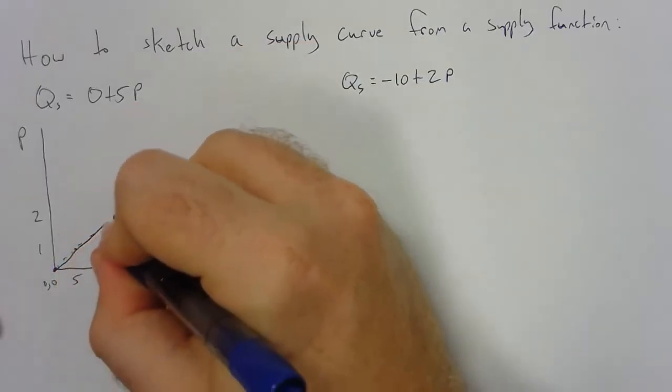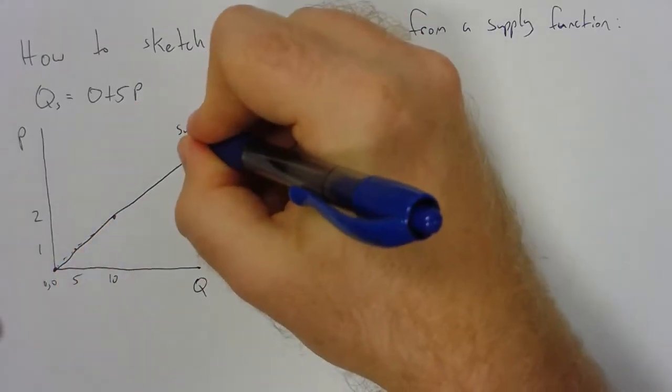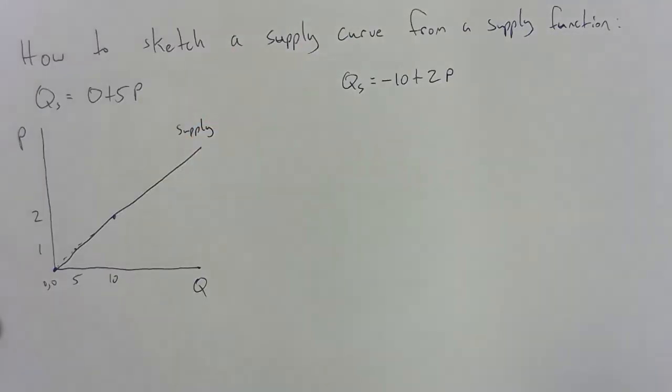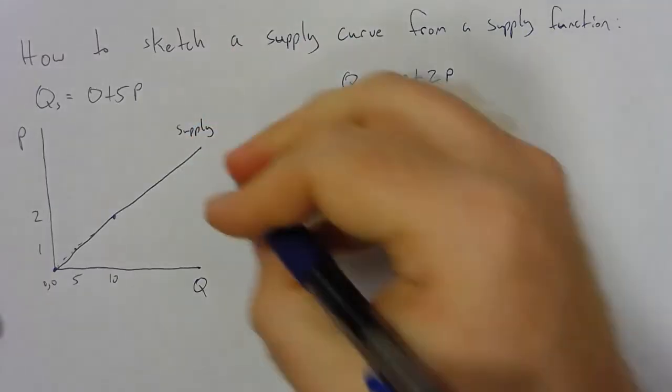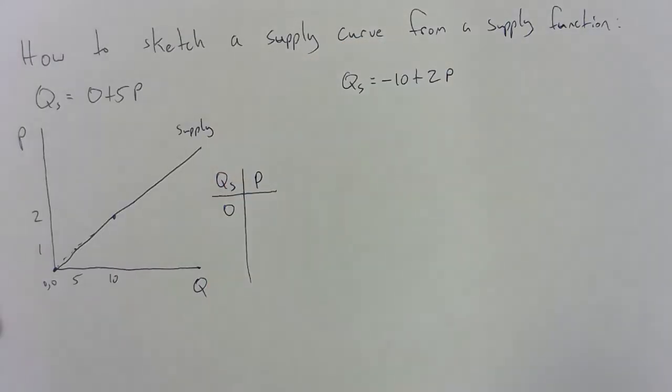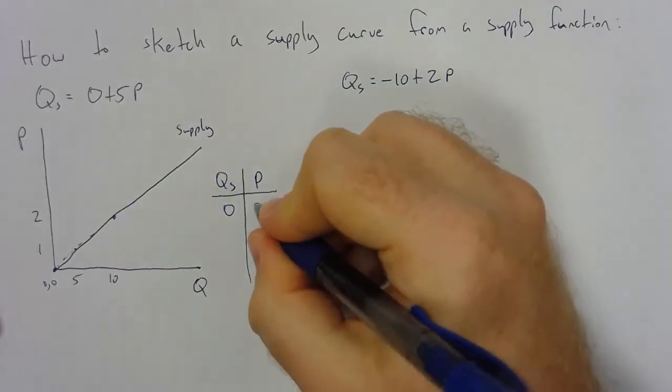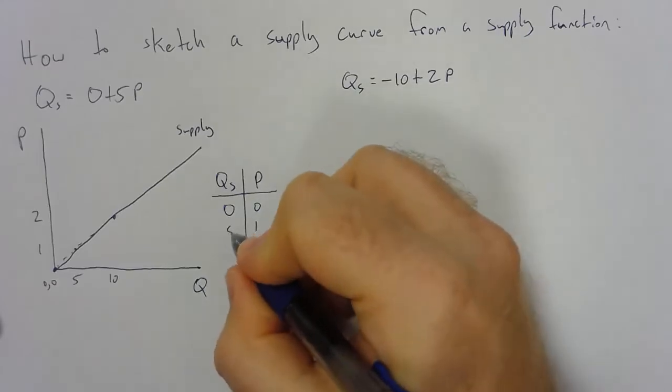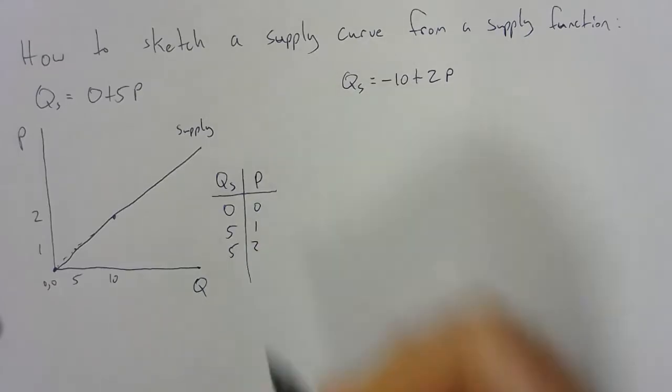And we end up with a supply curve that slopes up that looks like this. If we're so inclined, we could also create a supply table. At quantity of zero, price is going to have to be zero. At a price of one, we would expect quantity to be five, so on and so forth.